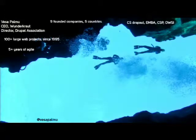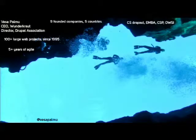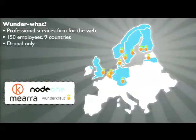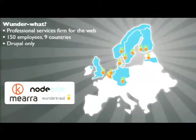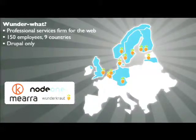My basic background is in computer sciences. I never went around to actually graduate from there, did my executive MBA later, and ended up basically running companies — the typical story for computer science students around the world. Wunderkraut is a professional services company for web. We do end-to-end services starting from developing the business of our customers, including hosting, support, and development — about 150 people.